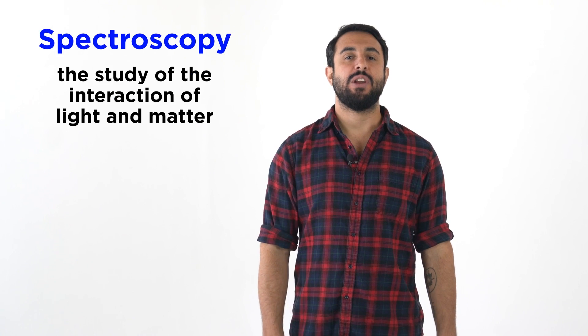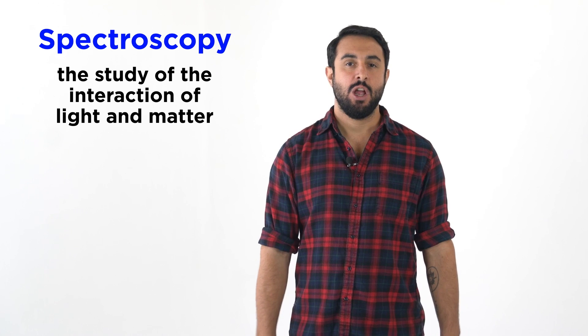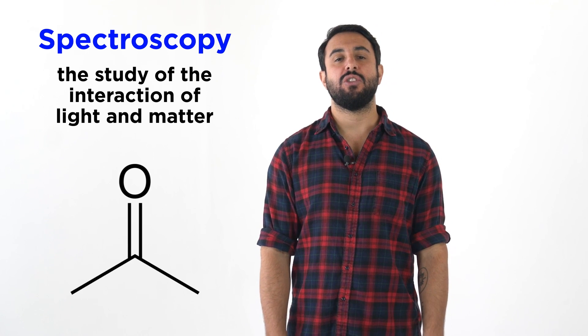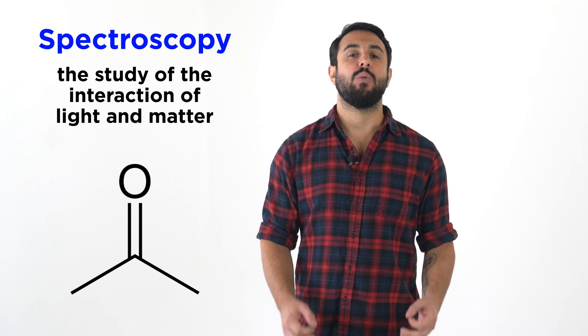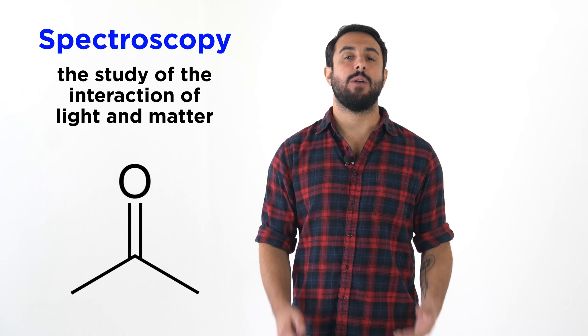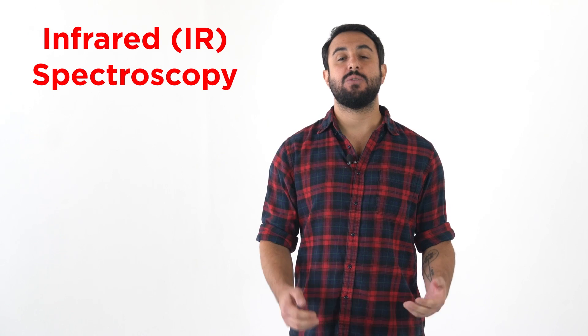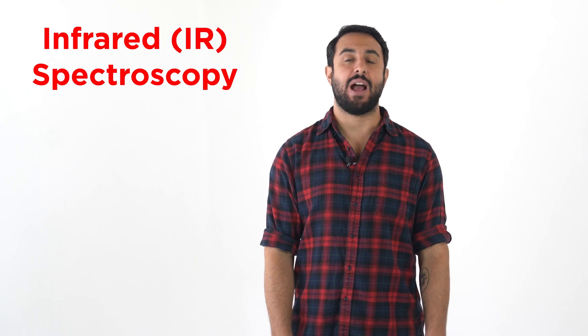Professor Davin Chegg here. We know that spectroscopy is the study of the interaction of light and matter. We can use this interaction to gather information regarding the structure of a molecule, irradiating substances with electromagnetic radiation of specific wavelengths and observing the interaction. IR spectroscopy is one such technique, so let's learn how this works now.